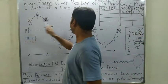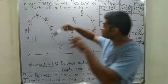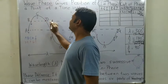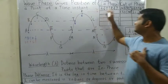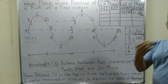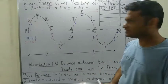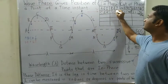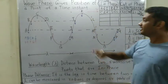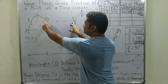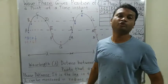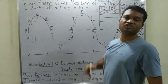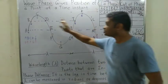Let us discuss points A and I. A point is going downward, I point is also going downward. Both are at the mean position at the same time. So A and I are said to be in phase. Similarly, B and J — both have the same displacement from mean position and both are moving in the same direction, so B and J are in phase. However, D and J are not in phase because D is going up and J is going down — they have opposite directions.